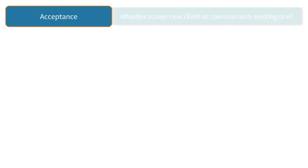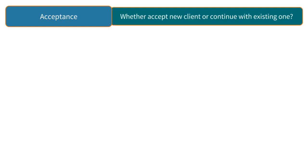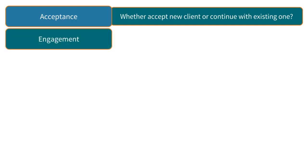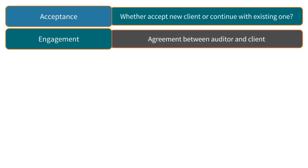Step 1: Acceptance. The auditors must consider before they begin the audit work whether they want to accept a new client or continue the audit for an existing one. They should identify if there are any factors which could cause the auditor problems when working with the client. Step 2: Engagement. If they are happy to continue the external audit work, they will need to ensure an agreement is in place between the client and the auditor. This is known as the engagement letter.